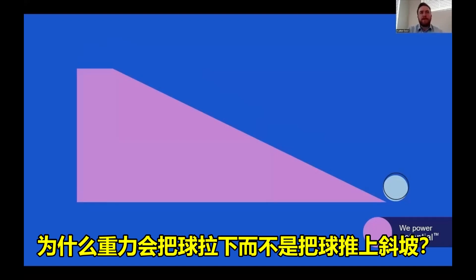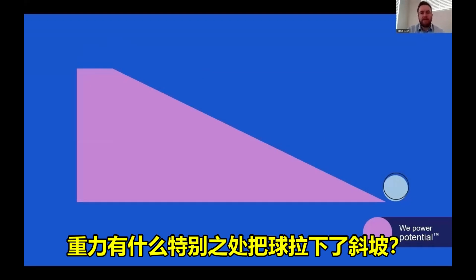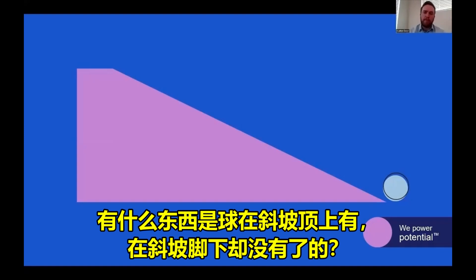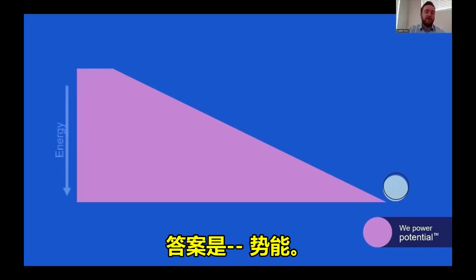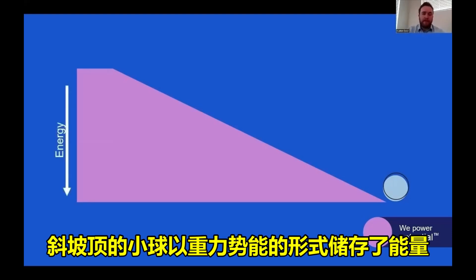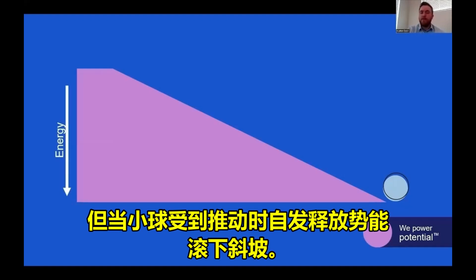But then my follow-up question is often, why does gravity pull the ball down the hill rather than push the ball up the hill? What is it special about gravity that's pulling the ball down the hill? What does the ball possess at the top of the hill that it no longer possesses at the bottom of the hill? And the answer is potential energy. The ball at the top of the hill has energy stored in the form of gravitational potential energy. But when given a push, the ball spontaneously releases its energy by rolling down the hill.